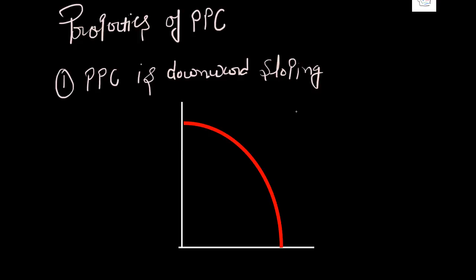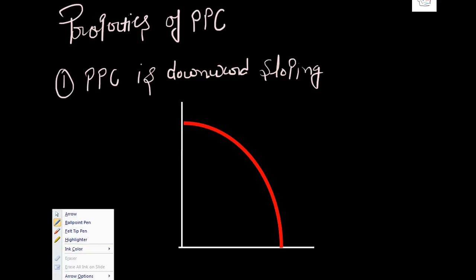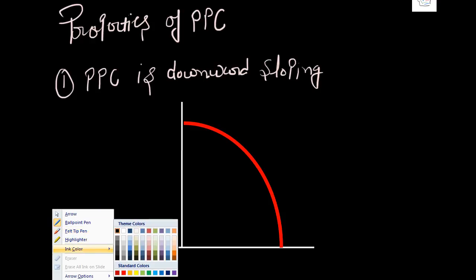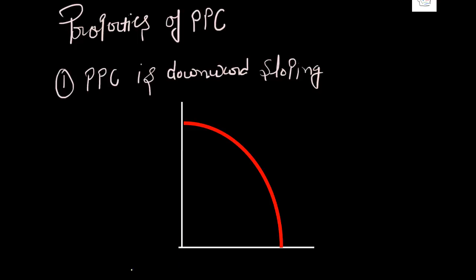Let us further understand this. Why is PPC a downward sloping curve? Why is it always required to slope downwards from left to right? Why not from some other direction? The answer to this question is pretty simple. Every single time you are required to increase the production of good X...